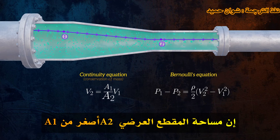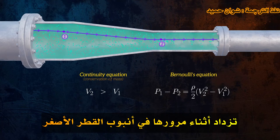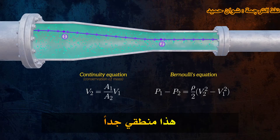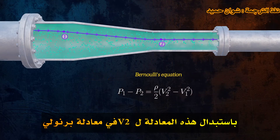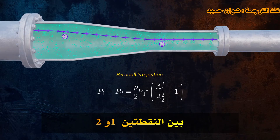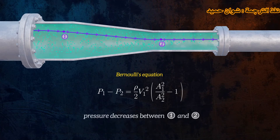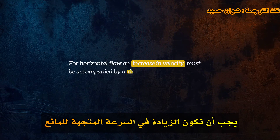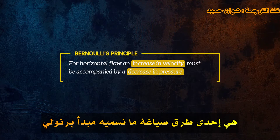The cross-sectional area A2 is smaller than A1, which means that the velocity of the flow increases as it passes into the smaller diameter pipe. This is quite intuitive. By substituting this equation for V2 into Bernoulli's equation, we can see that since the velocity increases between points 1 and 2, the pressure between both points must decrease. This concept, that for horizontal flow an increase in fluid velocity must be accompanied by a decrease in pressure, is one way of formulating what we call Bernoulli's Principle.